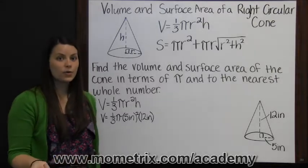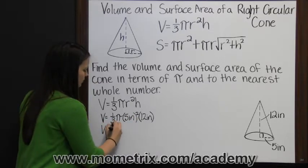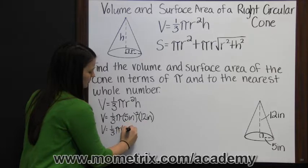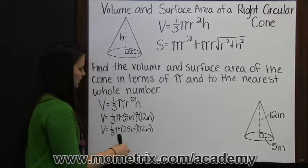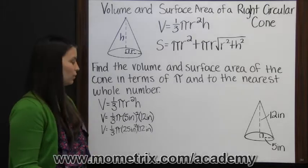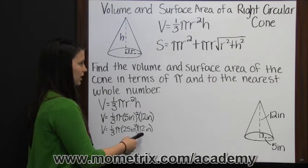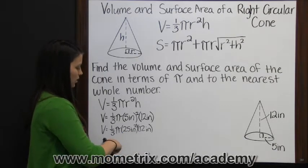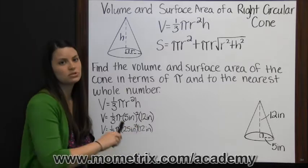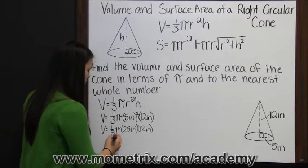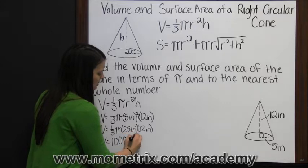Now we'll simplify that according to PEMDAS. Five inches squared is twenty-five inches squared. Now that all we have left is multiplication, we can multiply in any order we want. We could first take a third of twelve and we would get four — a third of twelve inches is four inches, or twelve inches divided by three is four inches. Four inches times twenty-five inches squared is a hundred inches cubed. Then times pi, that's a hundred pi inches cubed.